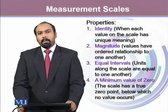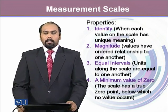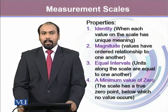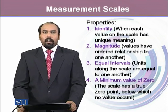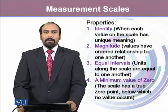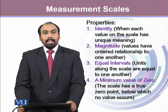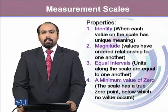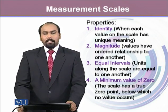The second property is magnitude — that values have an ordered relationship to one another. Like when we say the relationship between the numeric values 2 and 1, we already know that 2 is greater than 1. So the numeric value that has been assigned carries some measurement magnitude.